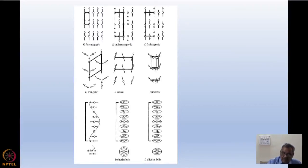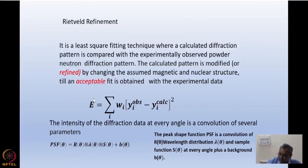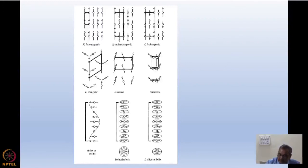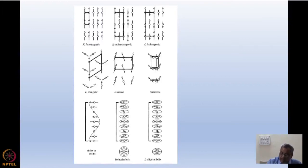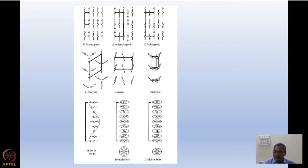A sine or cosine variation shows the moment length changing while direction stays ferromagnetic. A circular helix is where, as we proceed in one direction (e.g., (0,0,1)), the magnetic moment keeps rotating and finally returns to its original direction after a certain number of lattice points; 2π divided by that number gives the propagation vector H·a + K·b + L·c. There is also an elliptic orbit where both rotation and size variation occur. These represent the variety of possible structures in magnetic crystallography.